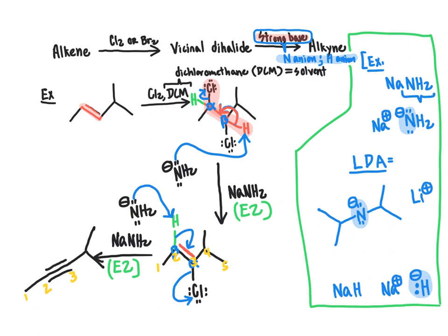Our final product has an alkyne — the result of a two-reaction sequence. We took an alkene, converted it to a vicinal dihalide, then treated that vicinal dihalide with a strong base to perform a double E2 elimination to give an alkyne. Let's do one more example to solidify this knowledge.